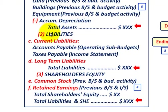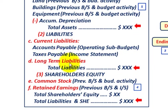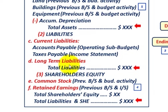After summing current and long-term assets we get total assets. Moving to liabilities: current liabilities include accounts payable coming out of the operating sub-budgets, and taxes payable coming out of our income statement. Then we have long-term liabilities to include as well — such as bonds payable and any borrowed monies for financing the operation — giving us our total liabilities, both current and long-term.